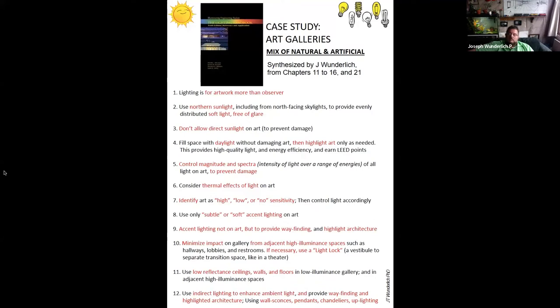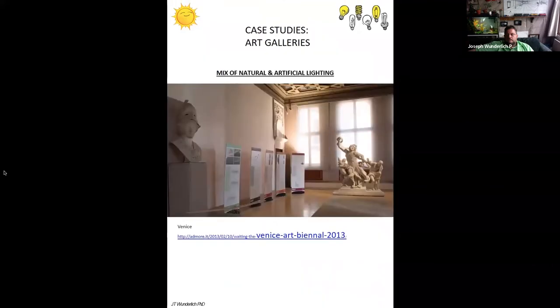Daylight first and then highlight art as needed. Controlled magnitude of the spectrum intensity distribution of the energies to prevent damage. Thermal effects of the light. Identify high, low or no sensitivity art, so you light accordingly or exhibit accordingly. Only use subtle or soft accent lighting. Accent lighting not on art, but for wayfinding and highlighting architecture. Minimize impact from adjacent high luminance spaces. You might want to light lock like you see in theaters.